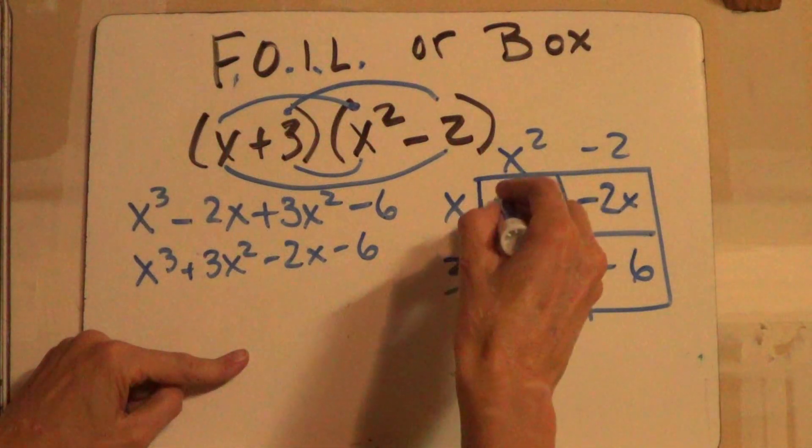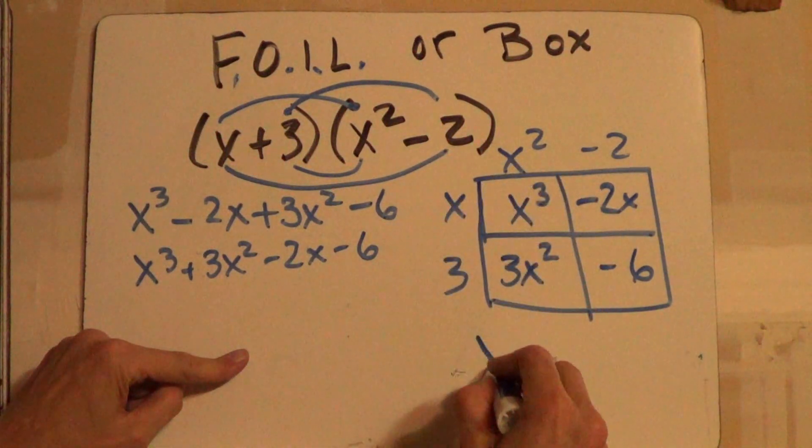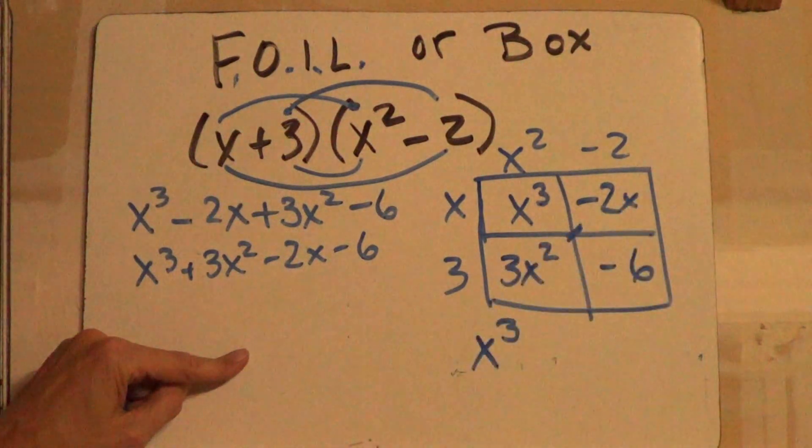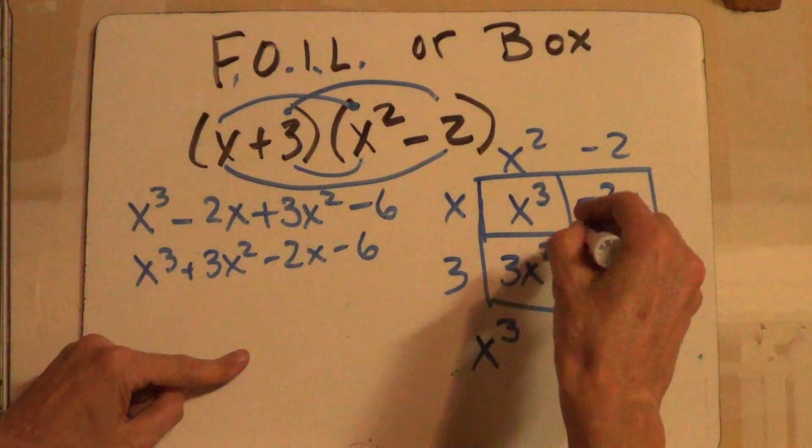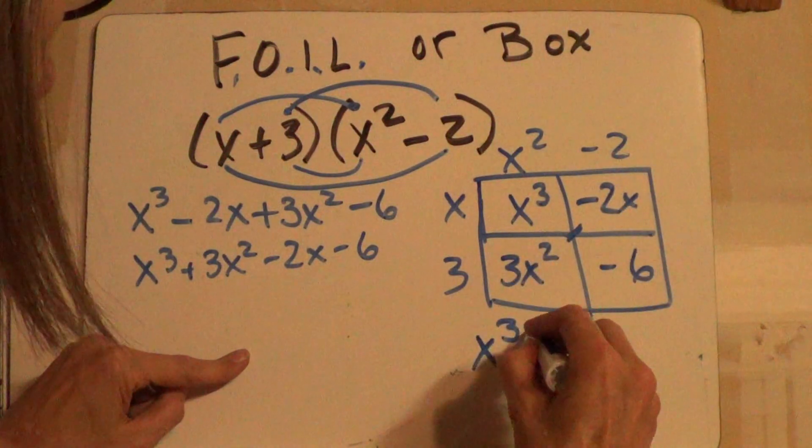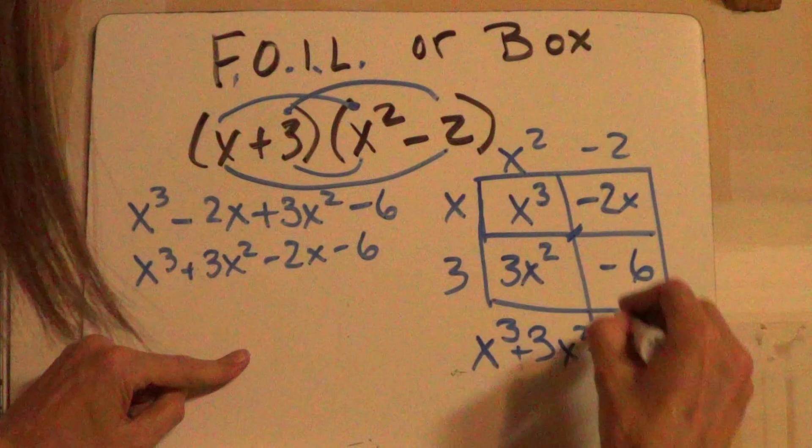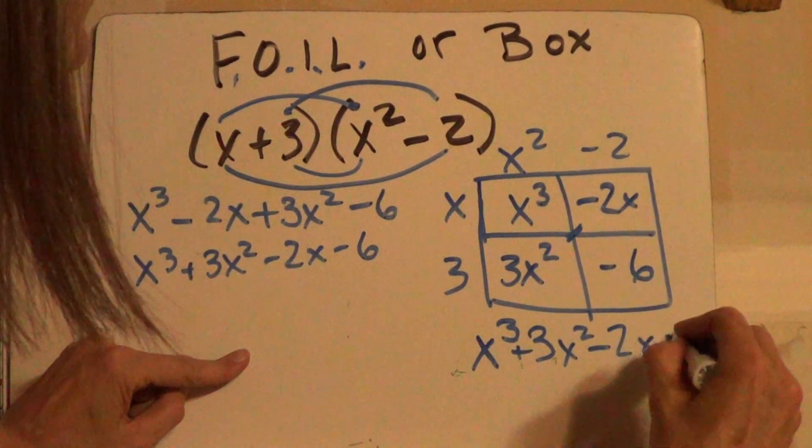Now, we take the, usually it's always this upper box here, x cubed, then we look at these two. If they're like terms, you can combine them. These don't happen to be. If they are, they're usually the diagonals. So we get plus 3x squared, minus 2x, and minus 6.